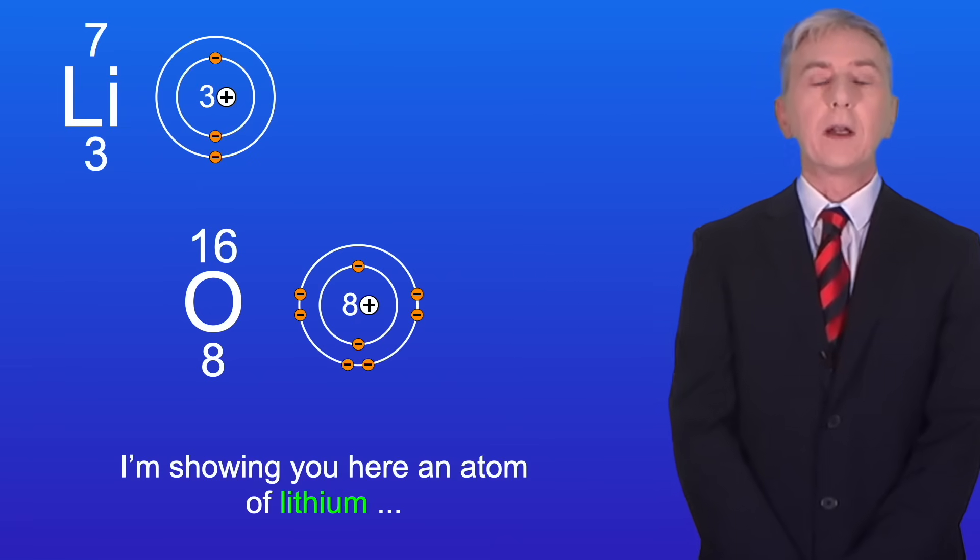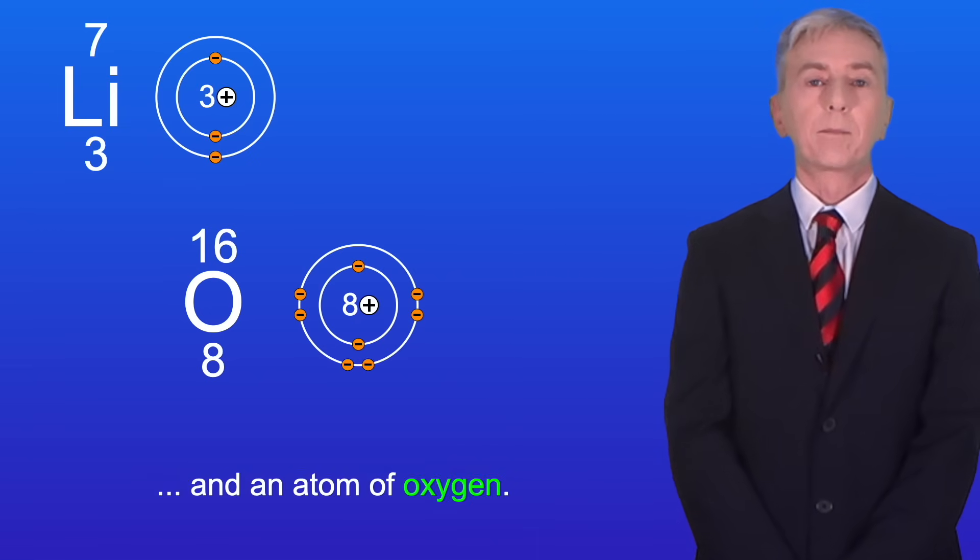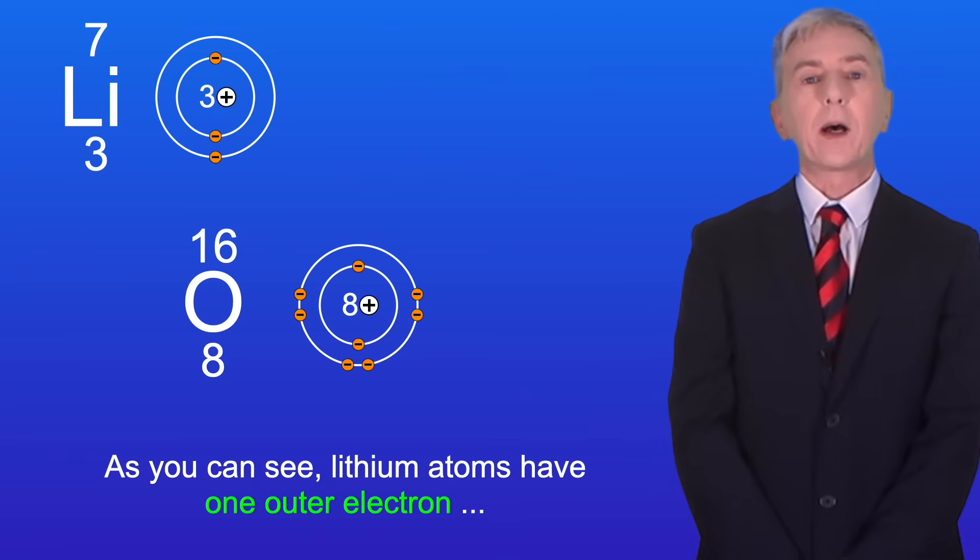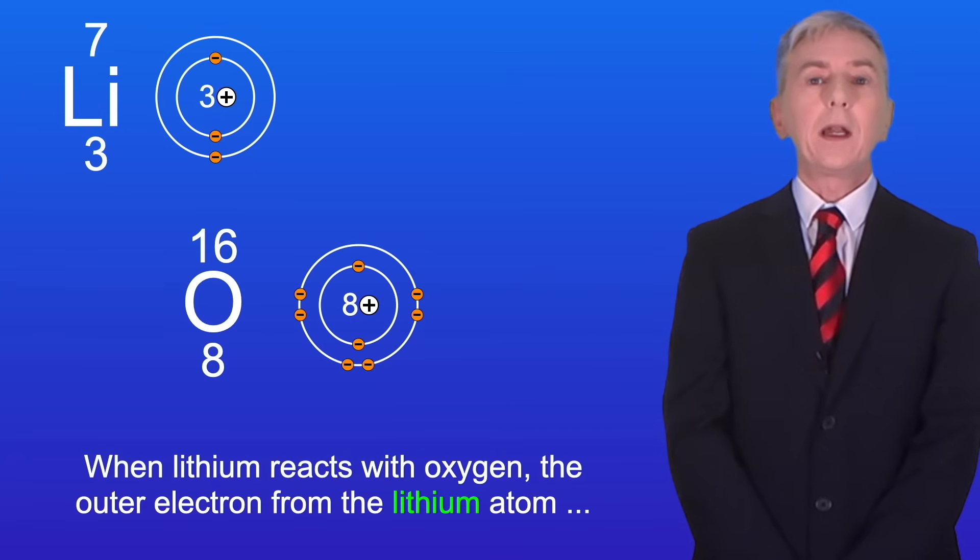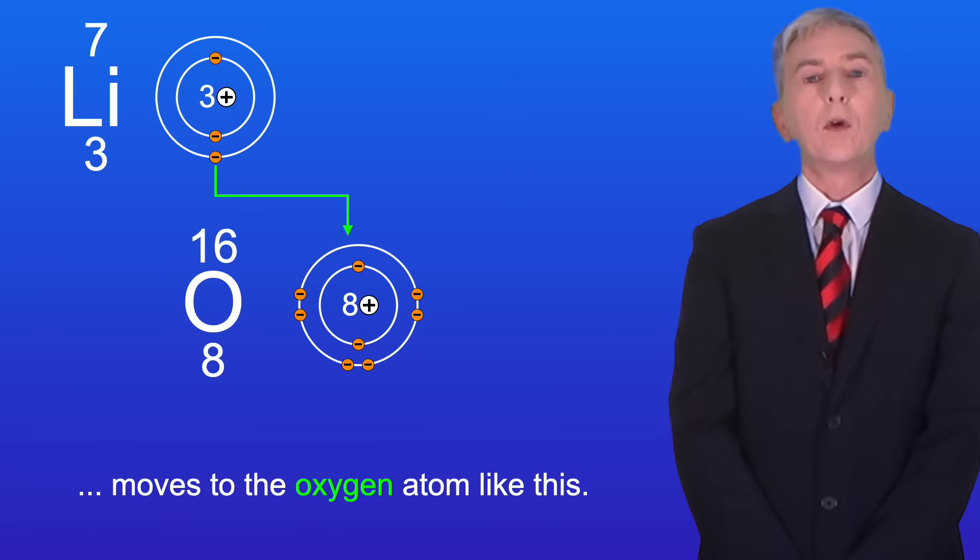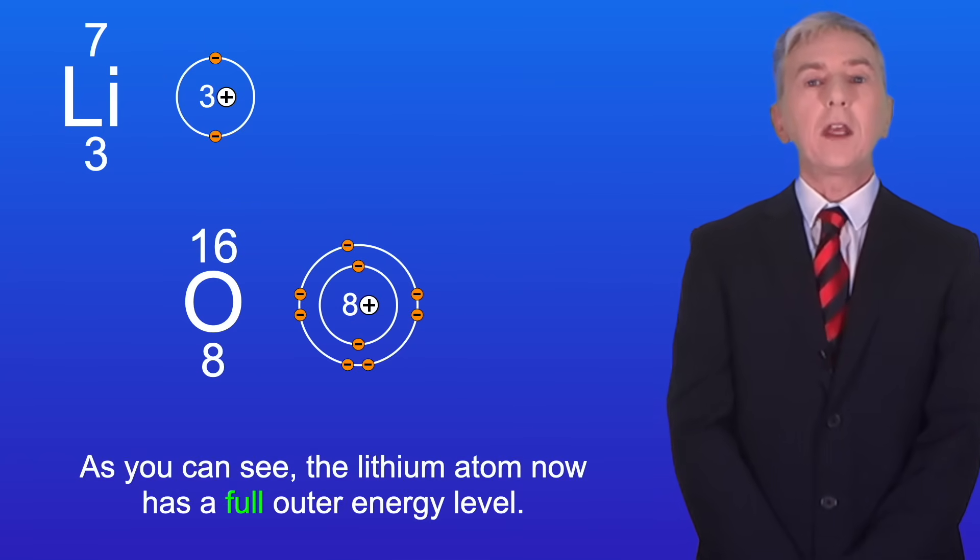I'm showing you here an atom of lithium and an atom of oxygen. As you can see, lithium atoms have one outer electron and oxygen atoms have six outer electrons. When lithium reacts with oxygen, the outer electron from the lithium atom moves to the oxygen atom like this. As you can see, the lithium atom now has a full outer energy level.